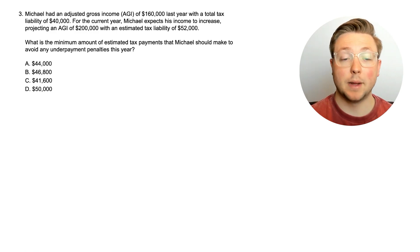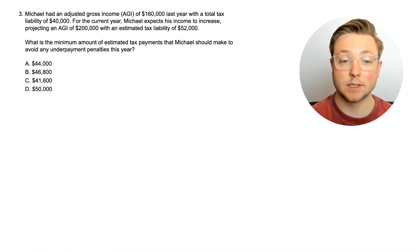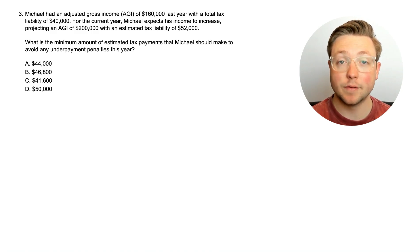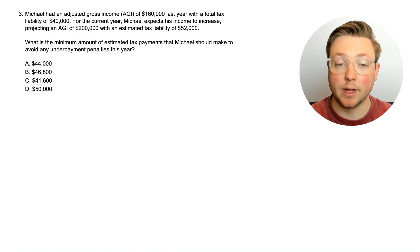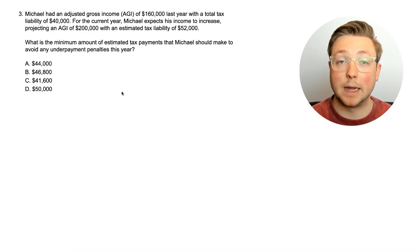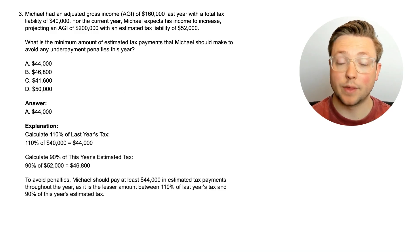Here is question three. Michael had an adjusted gross income of $160,000 last year with a total tax liability of $40,000. For the current year, Michael expects his income to increase, projecting an AGI of $200,000 with an estimated tax liability of $52,000. What is the minimum amount of estimated tax payments that Michael should make to avoid any underpayment penalties this year? The answer was $44,000.